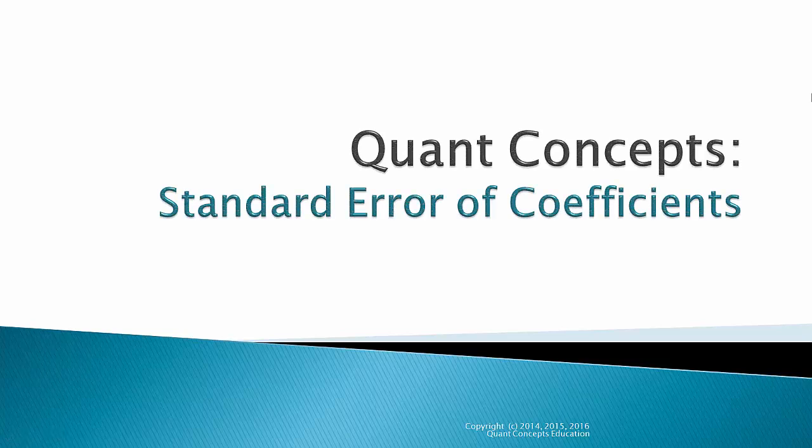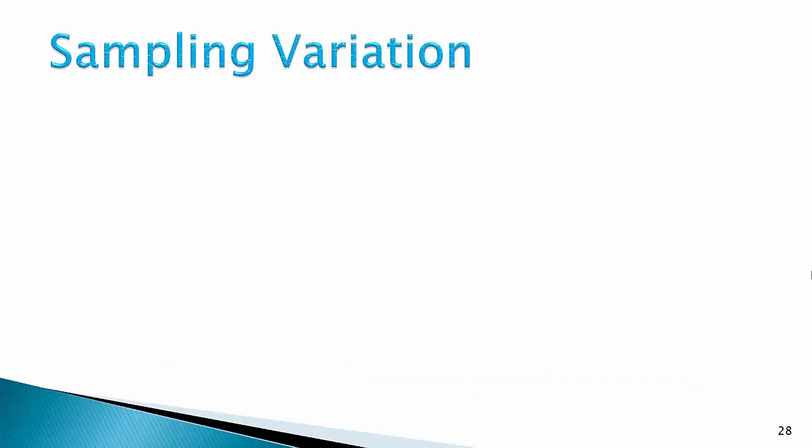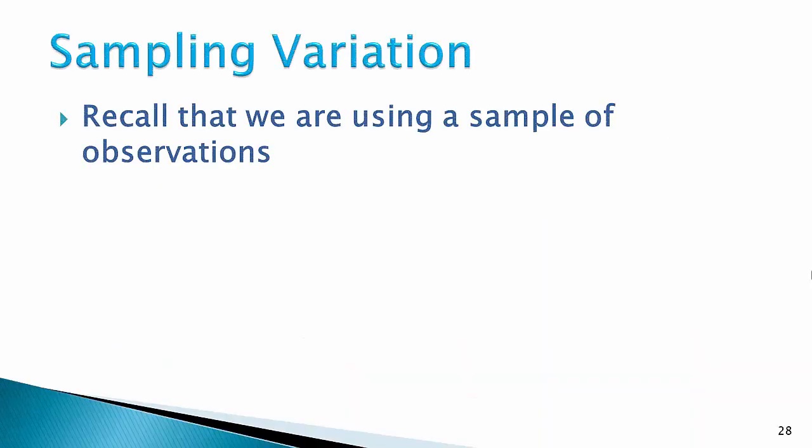This is a quick tutorial on the standard error of regression coefficients. Recall that we're using a sample of observations. Why? Because the population is too large. But what's the drawback of using a sample?